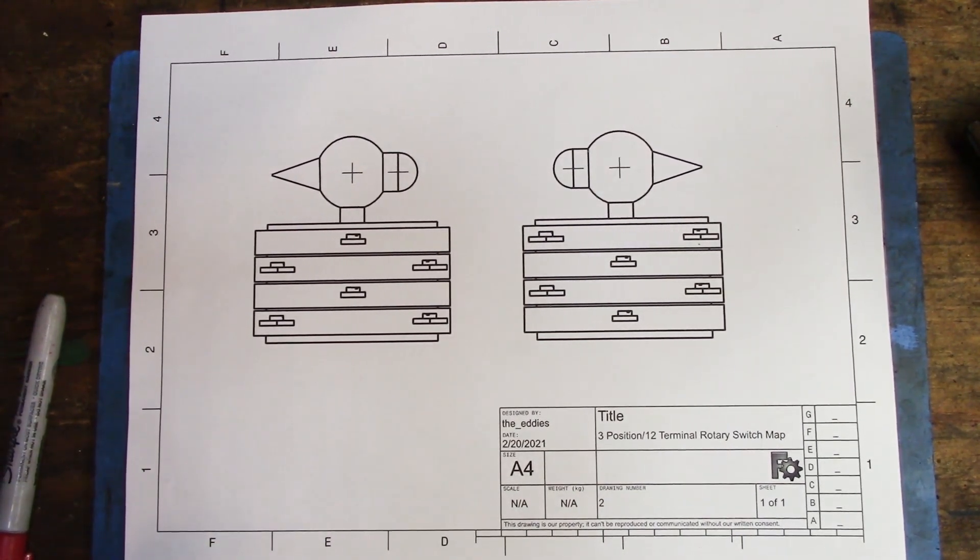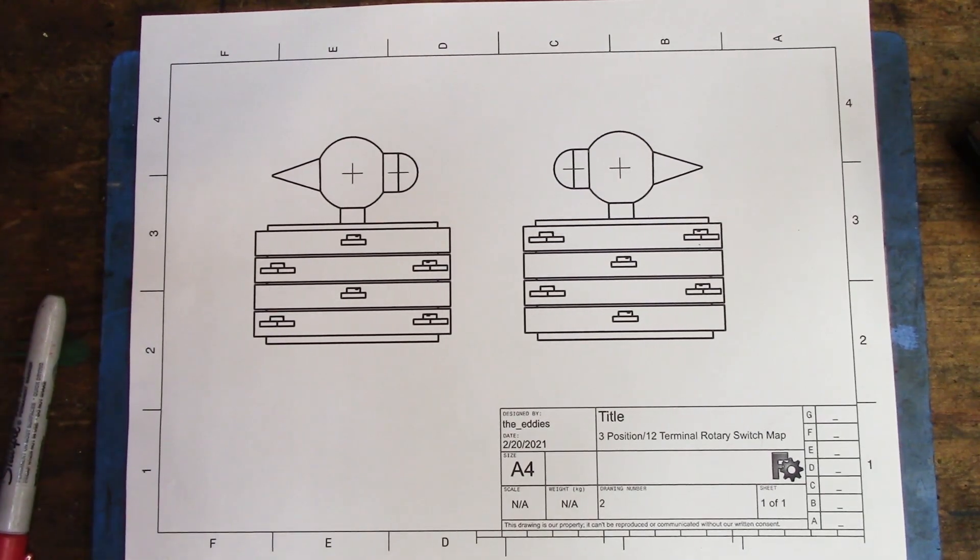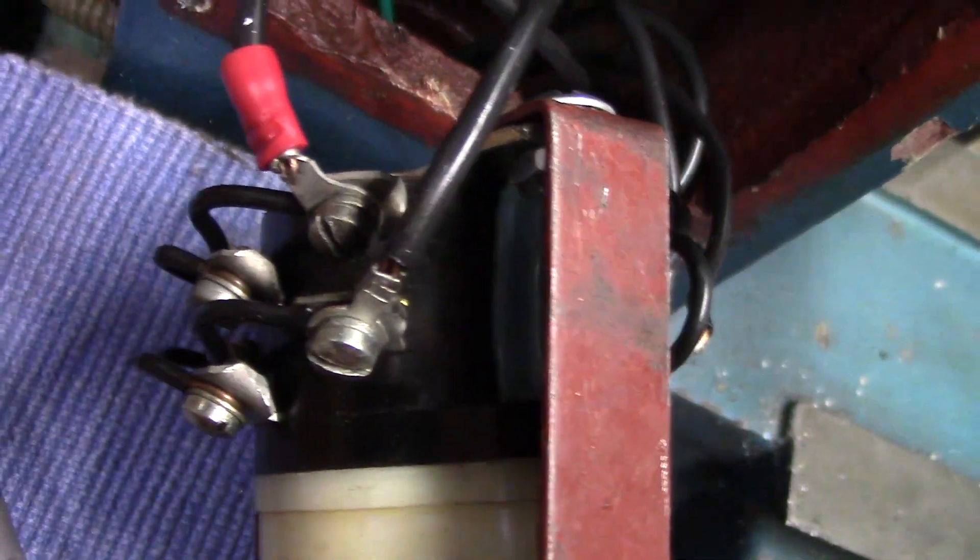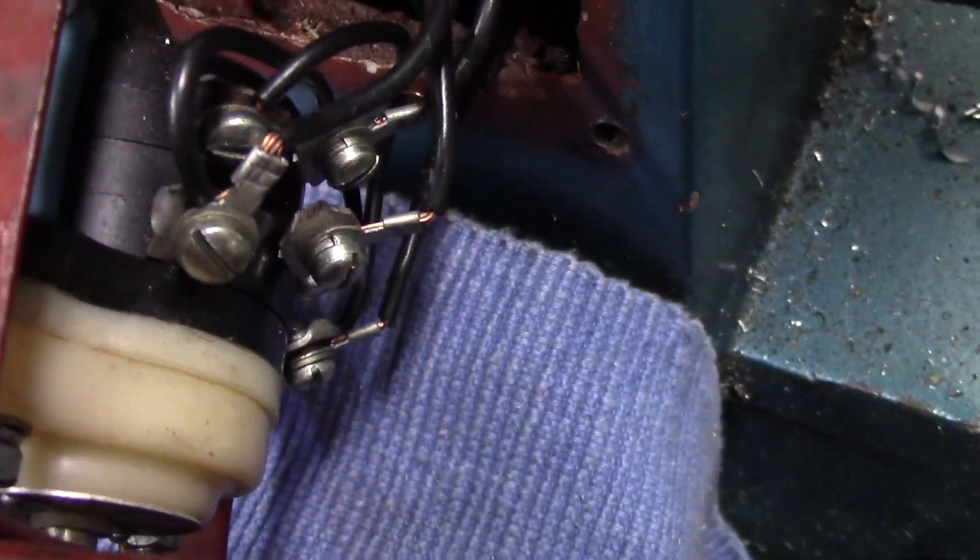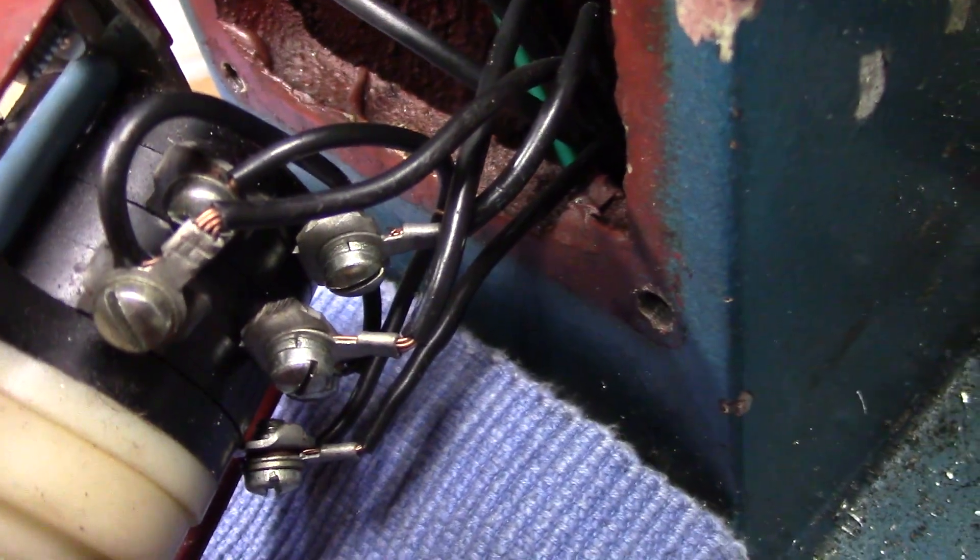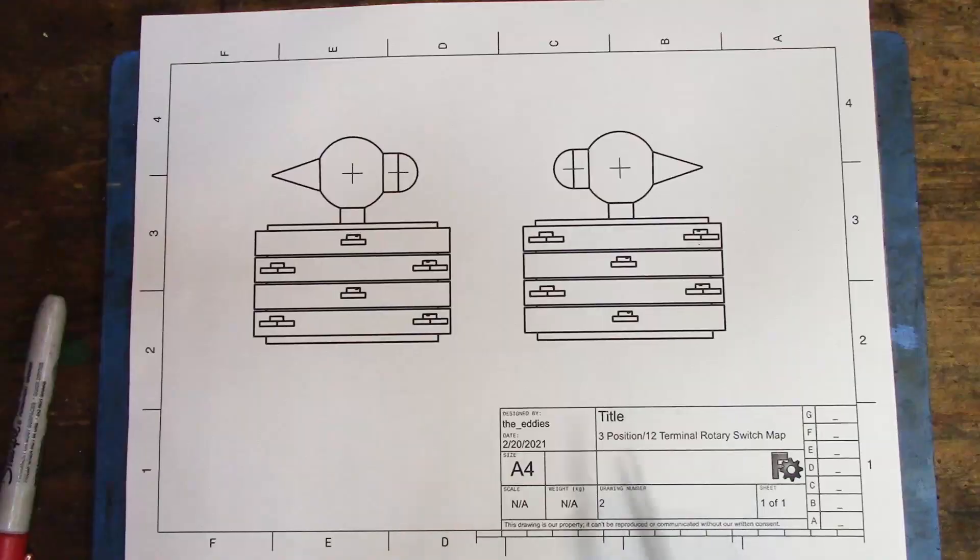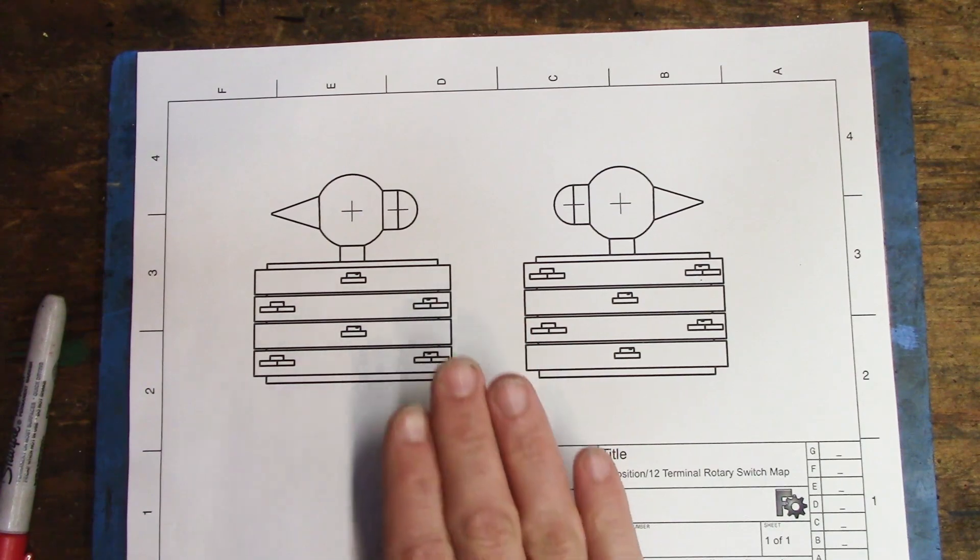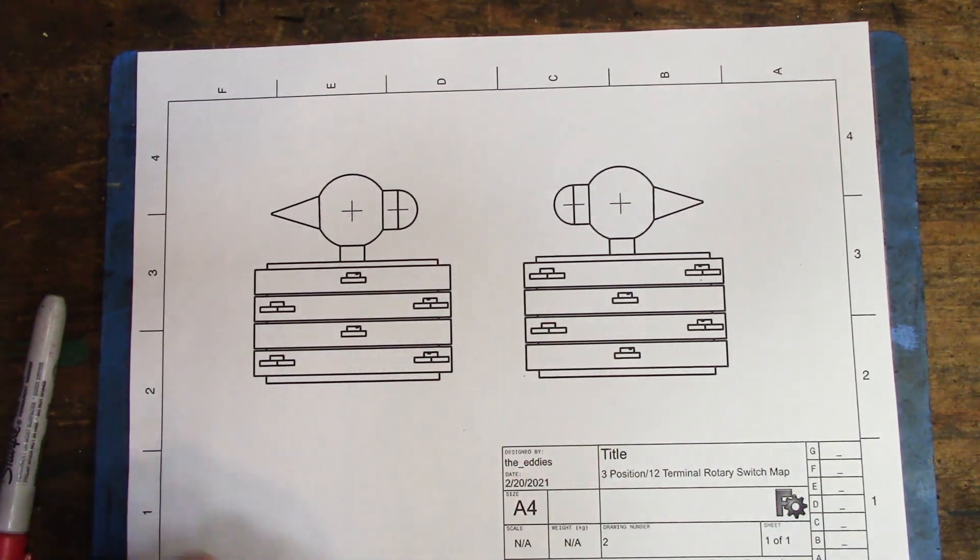As you may or may not know, if you watched the last video, with my machine, all the wires are black. So it made it a little bit difficult to determine what was going on and what's going where. And considering that you have a switch that has 12 terminals, it makes it even more interesting. So I took the time and mapped it out, figured it out. And so let me show you how it is wired for my machine.